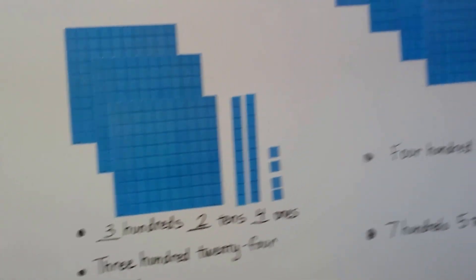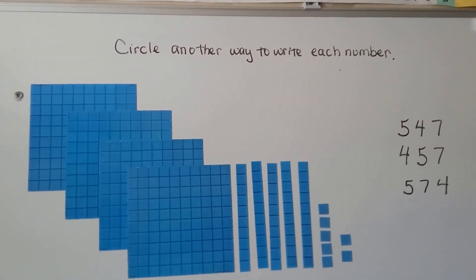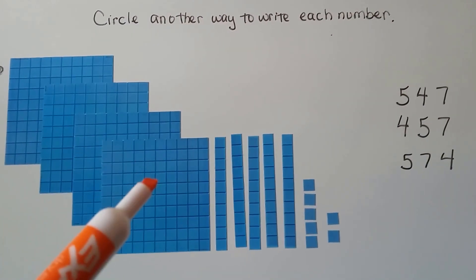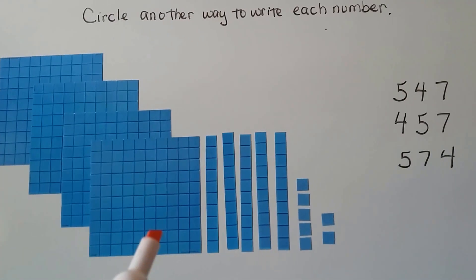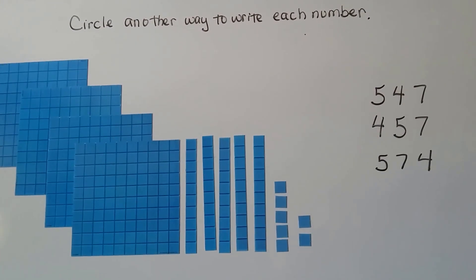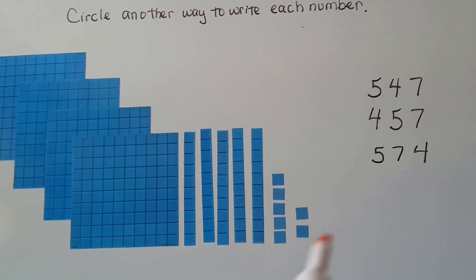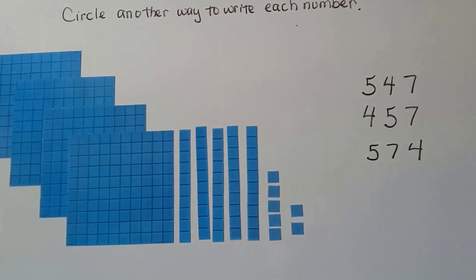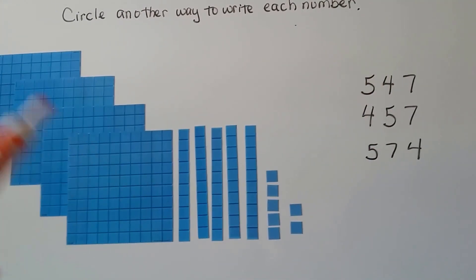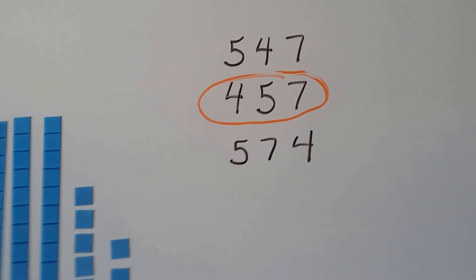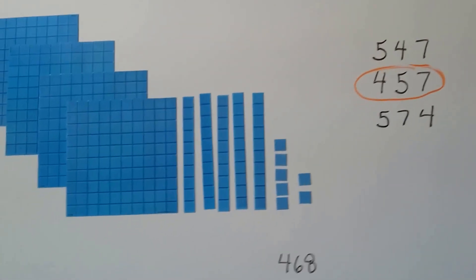Let's try circling another way to write each of these numbers. How many hundreds do we have? 100, 200, 300, 400 — so there are four hundreds. We've got one, two, three, four, five tens, and five, six, seven ones. So the answer is four hundred fifty-seven.